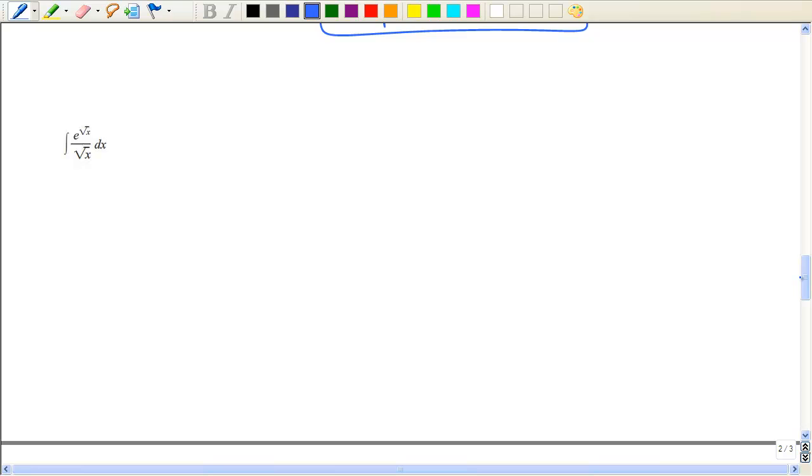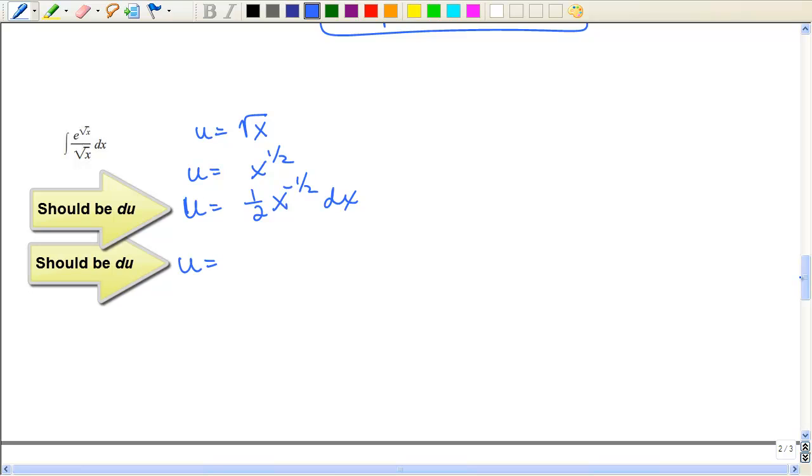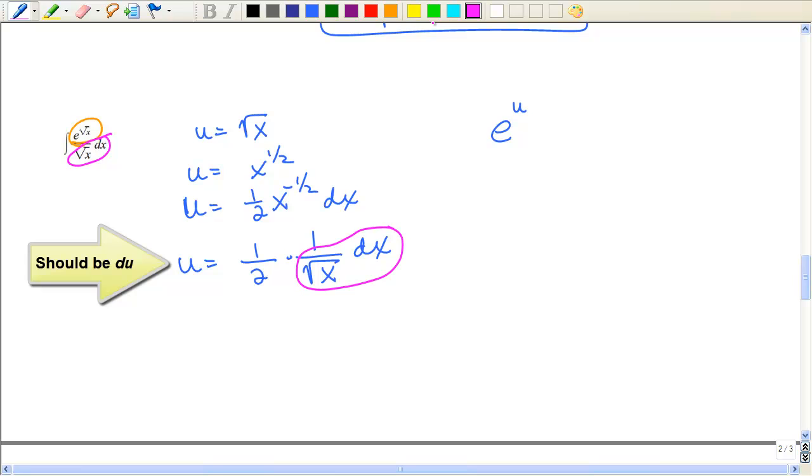Some more e's. This time we have a different type of exponent. Anytime the exponent on the e is something other than x, again, I'm going to let u equal to that exponent. I'm going to change that to the half power. Take the derivative. Let me rewrite that. That's 1 half times 1 over the square root of x dx. Sometimes it helps to kind of separate that. So on top, I believe I would have an e to the u. It's this other part, dx divided by the square root of x.